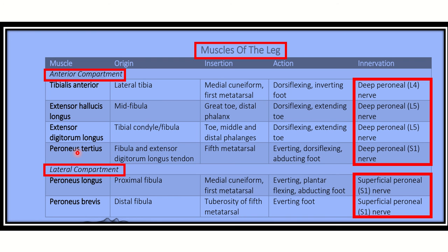An important point to remember: the lateral compartment is called the peroneal compartment, so one might think peroneus tertius belongs there — but it does not. Peroneus tertius lies in the anterior compartment, not in the peroneal or lateral compartment. Special attention must be paid to this muscle because the name 'peroneus' may mislead you into placing it in the lateral compartment.